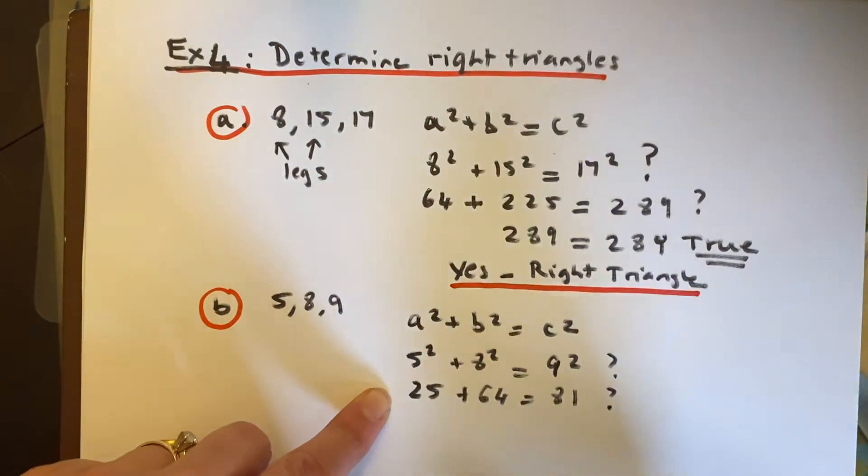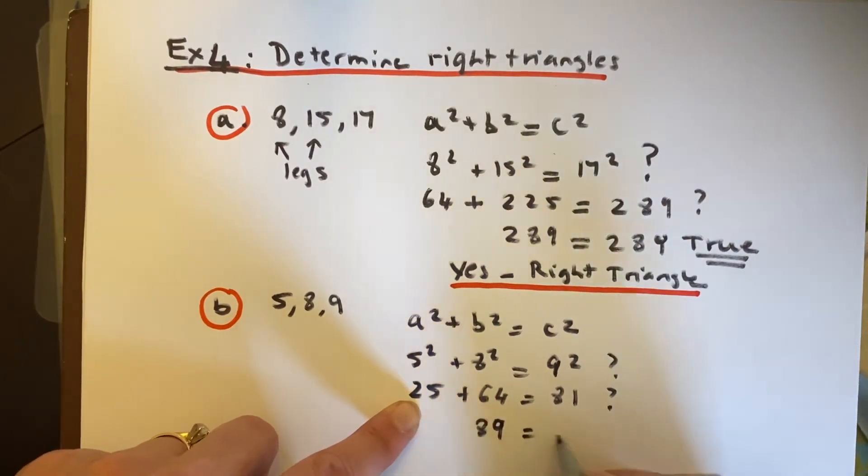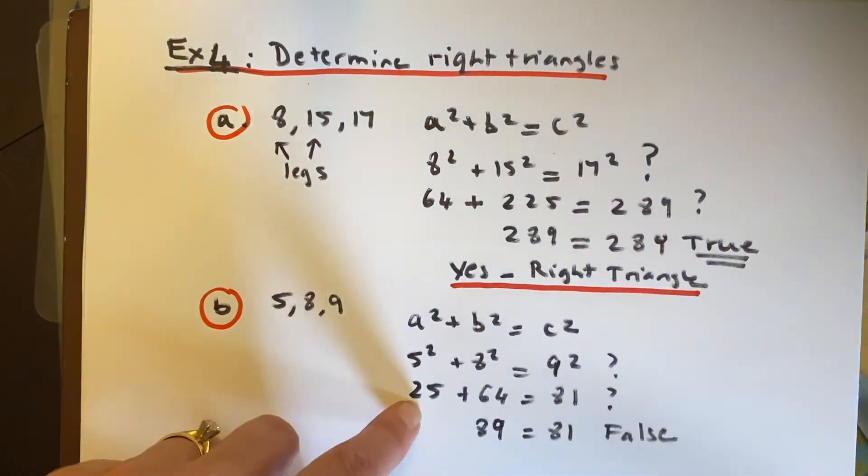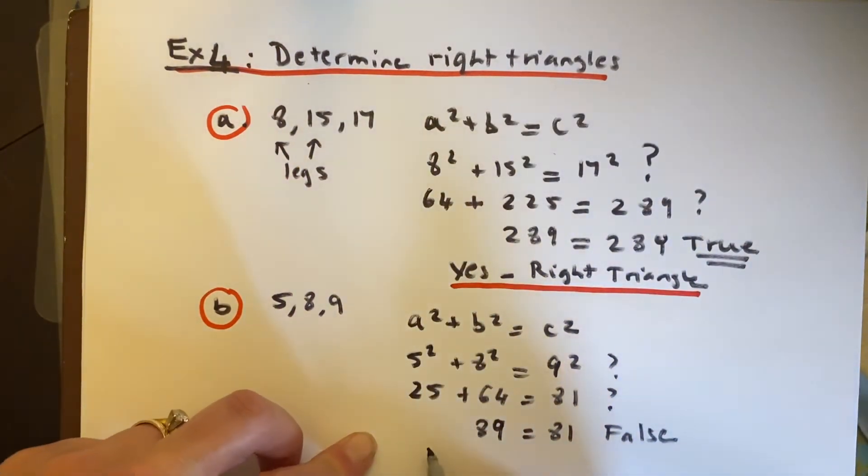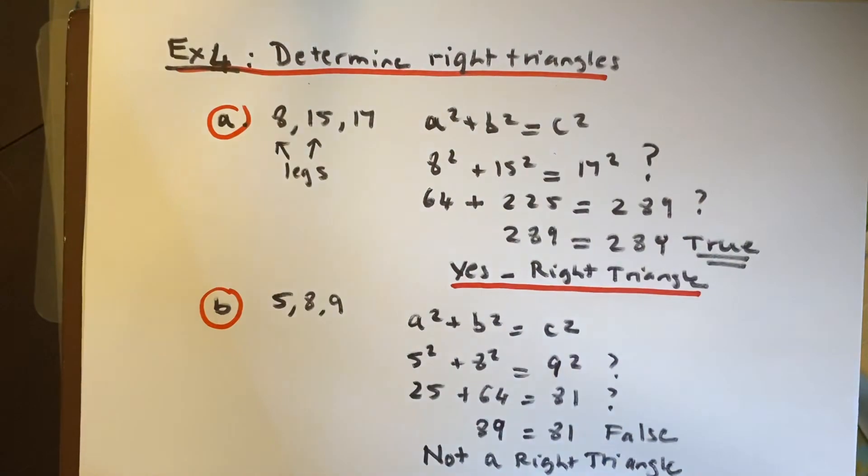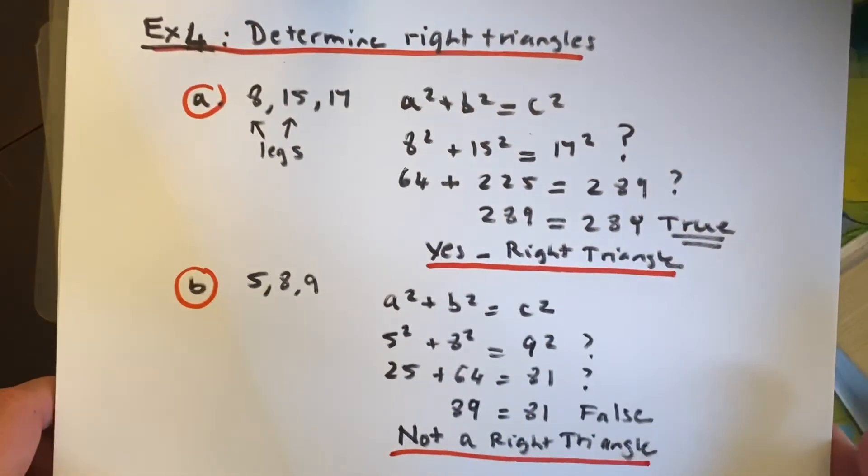Well, you can see almost right away that 5 and 4 are not going to add up to 1. You're in fact going to get 89 equals 81, which is a false statement. So this is not a right triangle. You're going to have several problems like this in the homework where you're going to have to determine what is a right triangle and what is not.